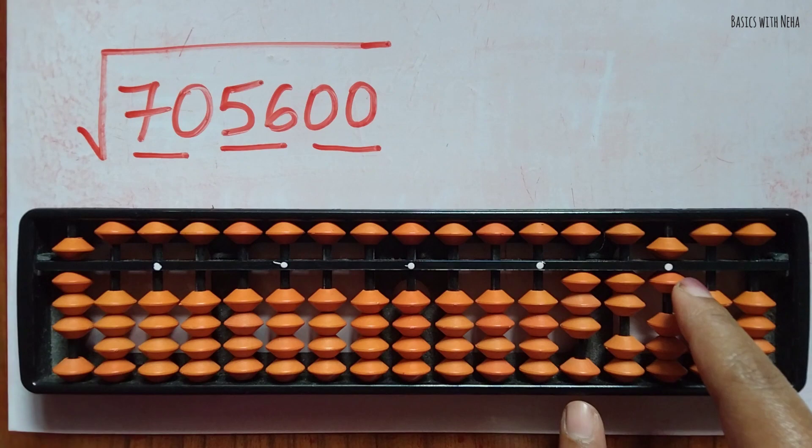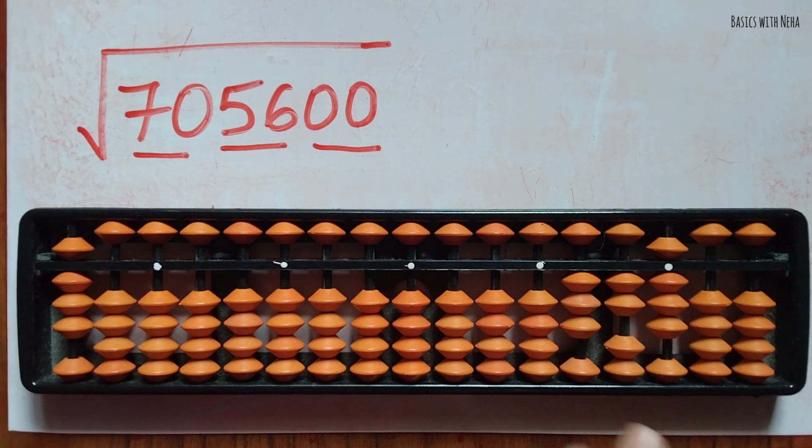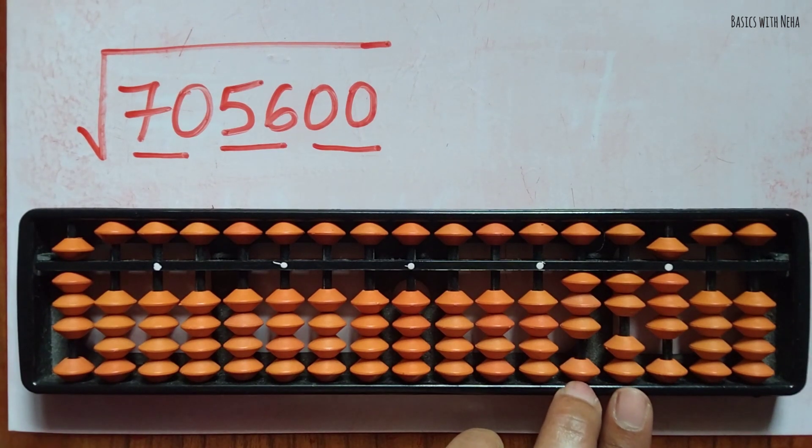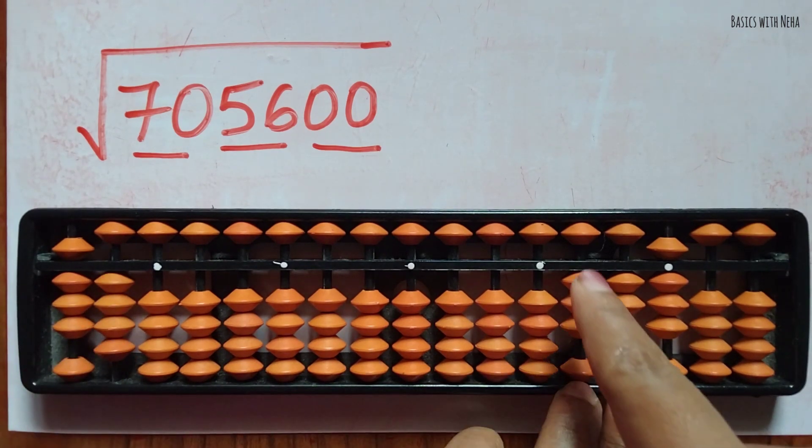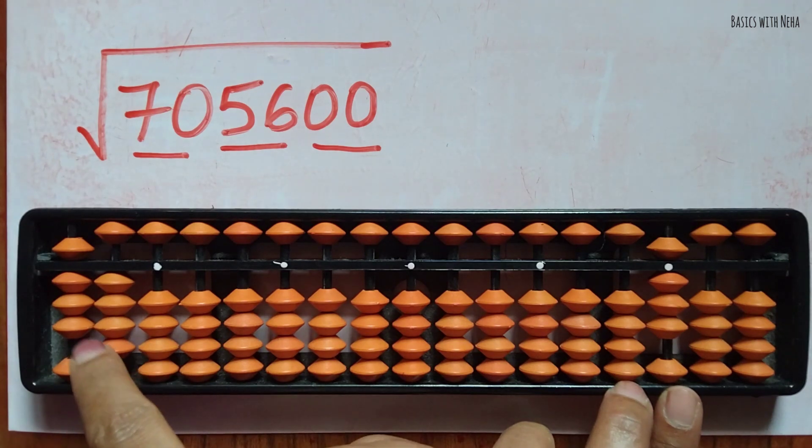This is 16. Two eights are 16 and 00. Now we have a remainder here, so these two numbers to be considered. Eight fours are 32. Now these two rods, four fours are 16. 16 half is 8.